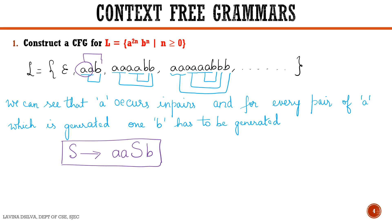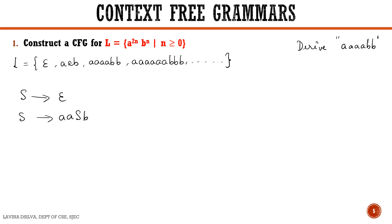Let us take one example and derive the strings of this particular language using the two rules we have designed. To derive the third string in the language, we take S, which derives aaSb using the recursive rule — this helps us start with the first terminal symbol. Then this S is replaced again with aaSb.